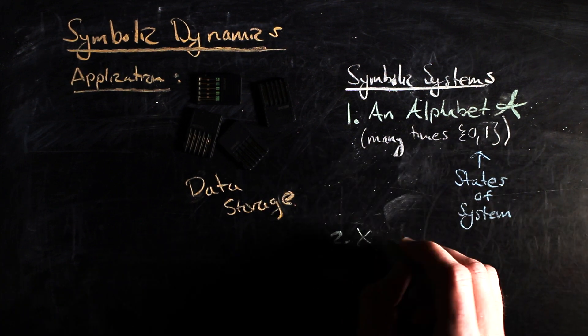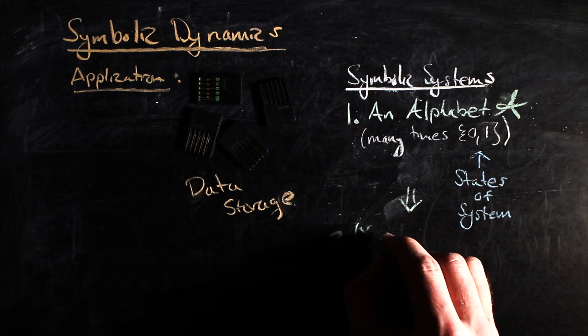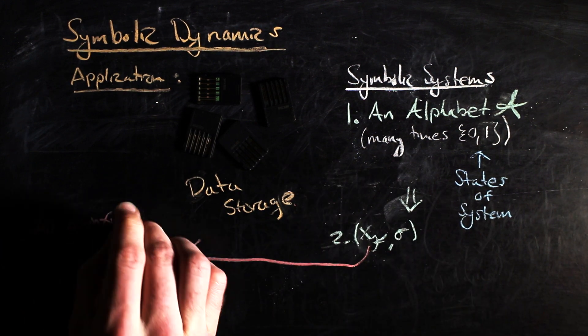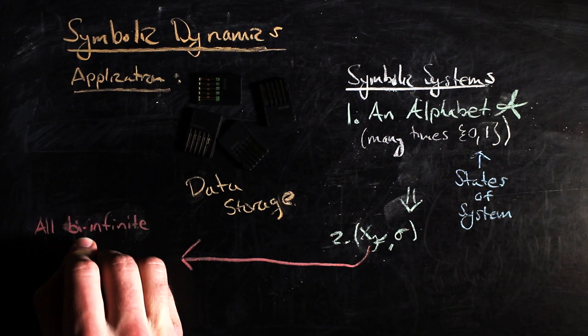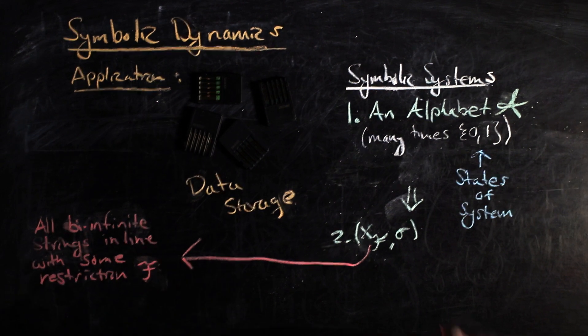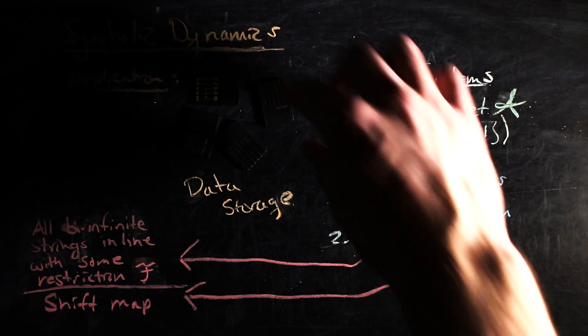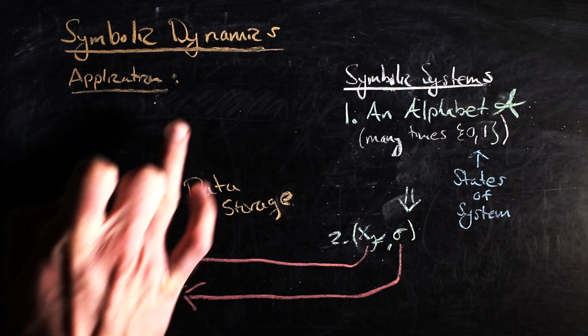The symbolic dynamical system is then formed by taking the collection of all allowable bi-infinite strings of these symbols, given some restriction, and then a shift map. Sometimes, instead of the bi-infinite ones, one-sided strings are used instead.